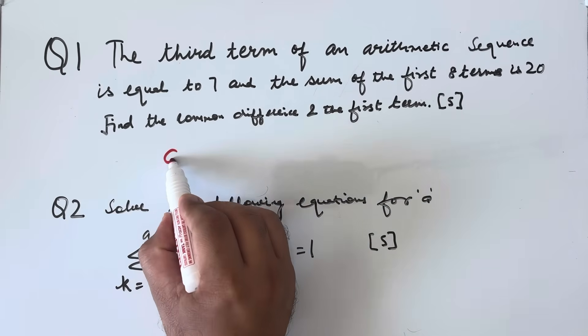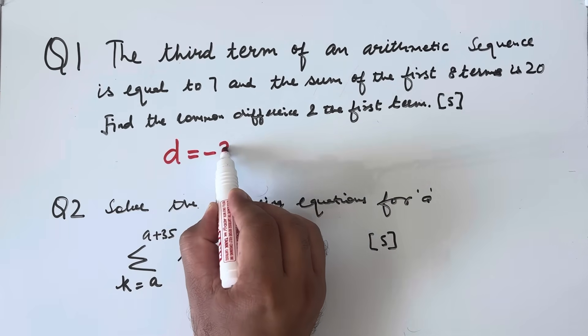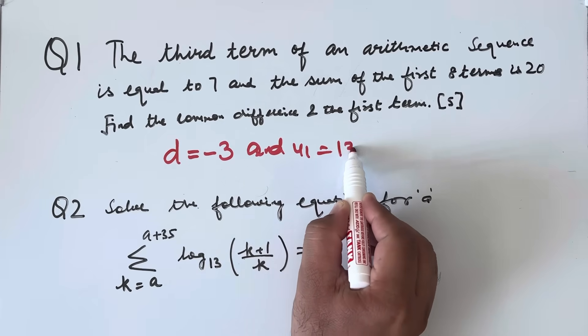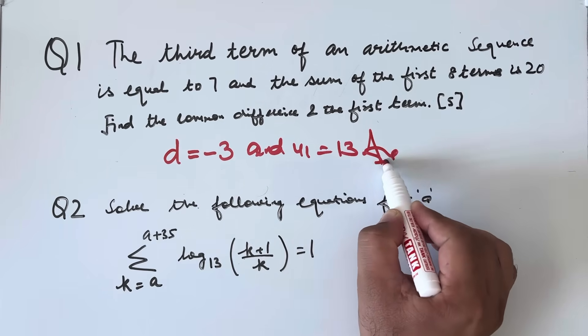Answer will be d value, that is common difference will be minus 3, and the first term u1 will be 13. This is of 5 marks.